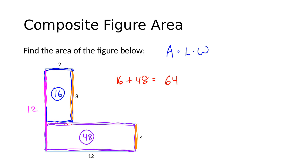Similarly, if I needed to know the length of the missing horizontal piece, I could find that as well. The bottom is 12 — that's the full horizontal distance — and the piece on the top is 2. If I take 2 away from 12, that gives me what's left: so the length of that piece would be 10. I didn't need those to find the area, but if I wanted to find the perimeter, I would need those — and I'd just add up all the sides.